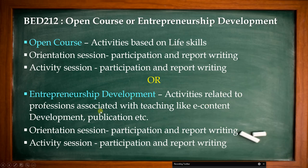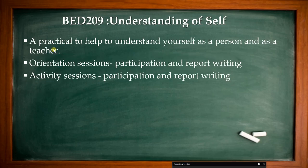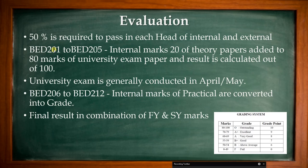For entrepreneurship development, activities are related to the teaching profession, like e-content development, publication, writing books, etc. Assessment for all activities from BAD 208 to BAD 2012 is based on two reports: an orientation session report and an activity session report. The college provides points to you for writing these reports, and points differ for each specialized activity. So this covers the entire curriculum from BAD 201 to BAD 2012.